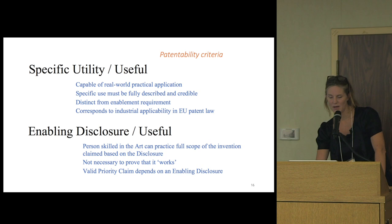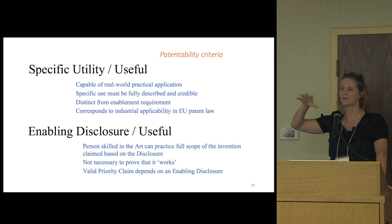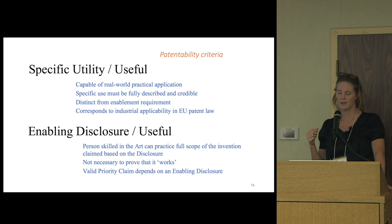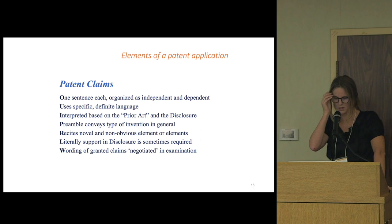The sections of a patent application include: a title, an abstract, a field of invention, drawings — your figures with your data — a background section, a summary, definitions, a more detailed description, and examples — those are your experiments where you describe the work that supports your invention.